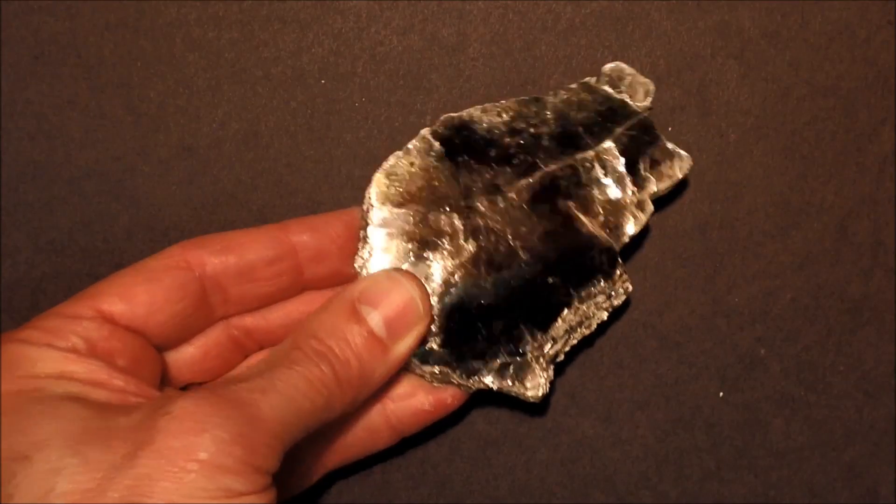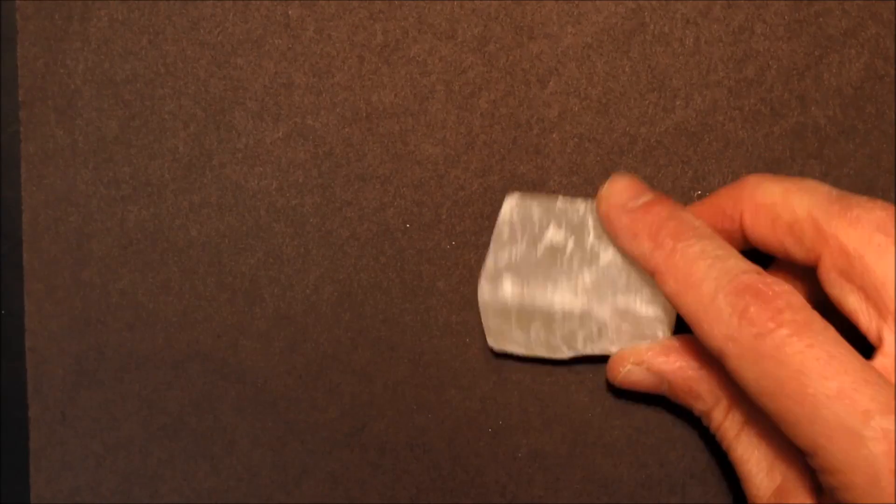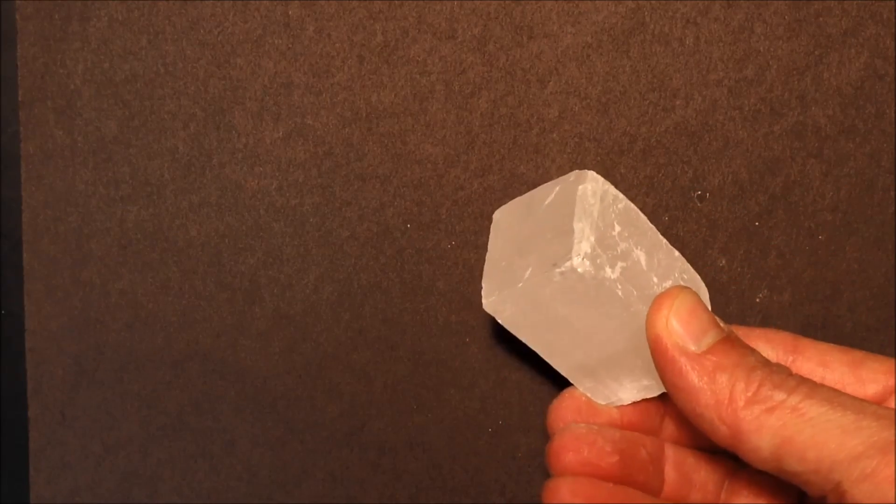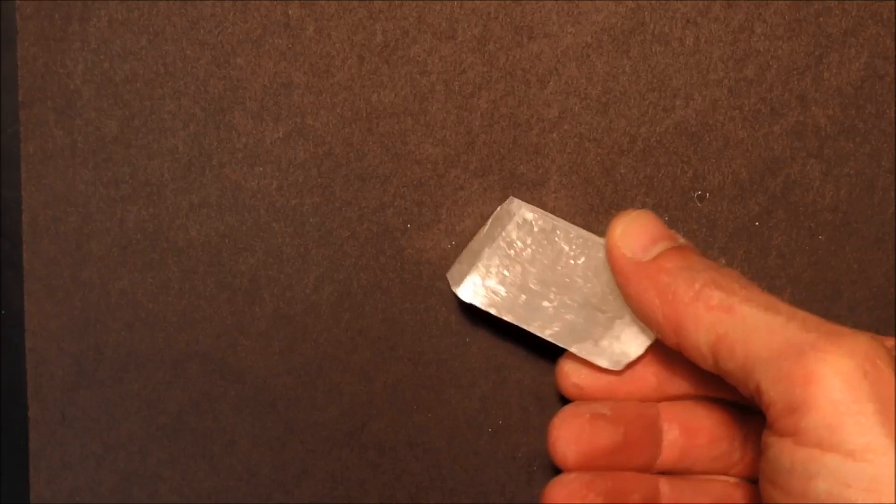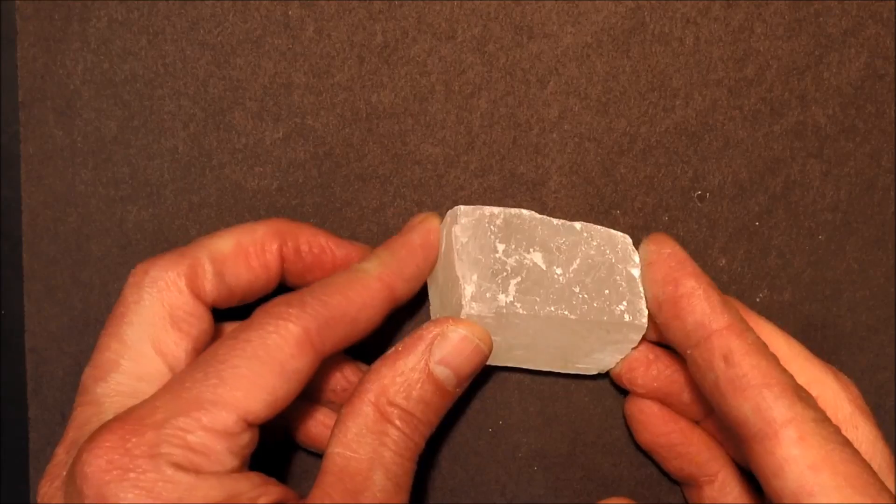That one is cleavage. It breaks this way, this here. Now this is a very good example of cleavage. You see cleavage on all the sides, very clean angles. So very obvious cleavage but not all cleavage is that clear or noticeable.